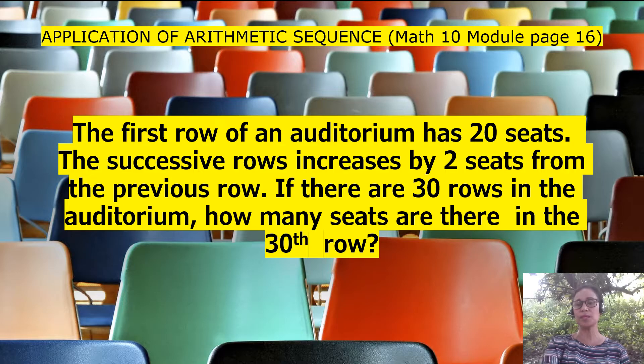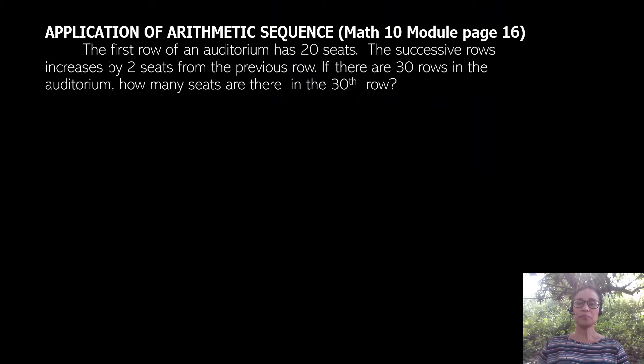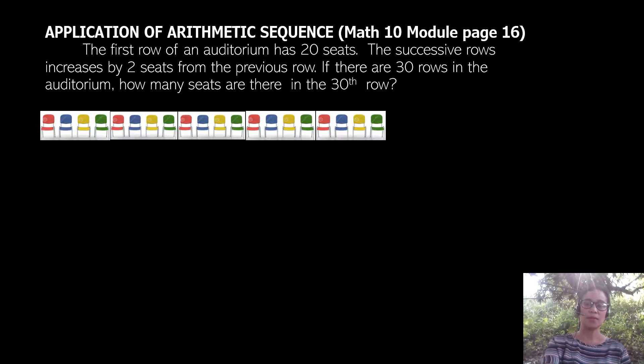Now, how do we solve this? It will be useful to use illustrations. Let's take the first row. I'm going to use yellow for the first row with 20 seats.